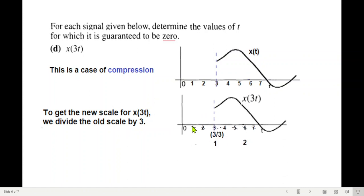So we divide everything by 3. So I'm just taking this part, 3 divided by 3 this will become 1, 6 divided by 3 will become 2, so this is our new scale. And now you can see that the signal is 0 from, x(3t) is 0 for t less than 1 for the new scale. So from the figure we can see that x(3t) is 0 for t less than 1.